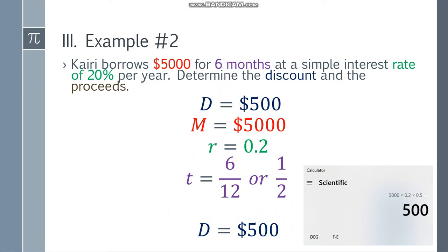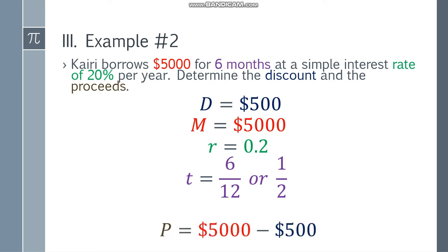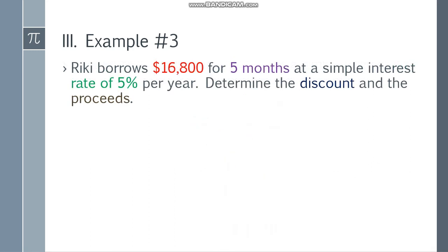For the proceeds, P equals M minus D. We have P equals $5,000 minus $500. 5,000 minus 500, and you will get an answer of $4,500 for the proceeds.